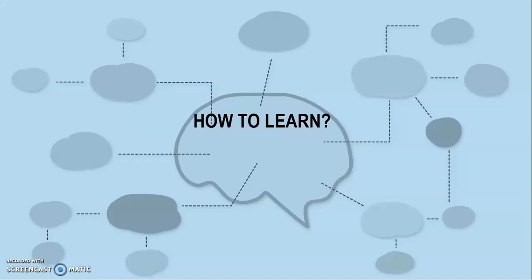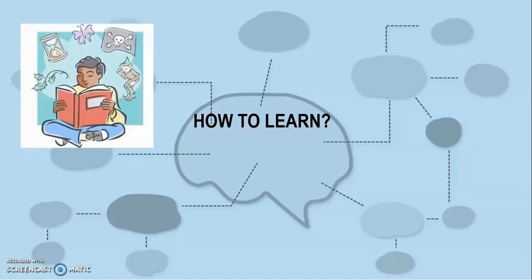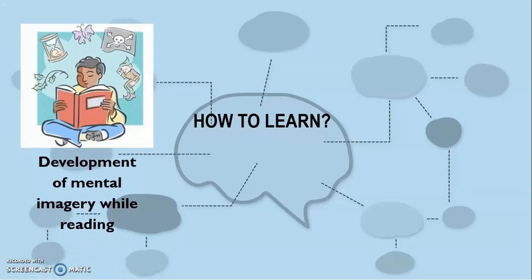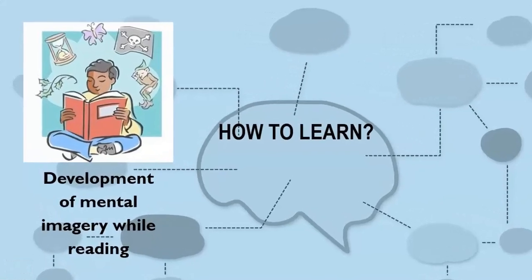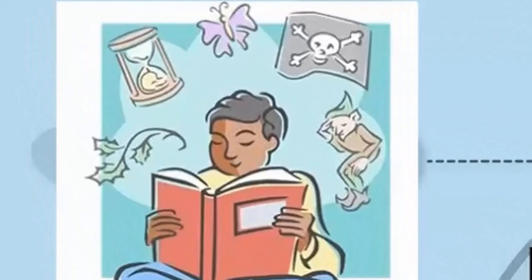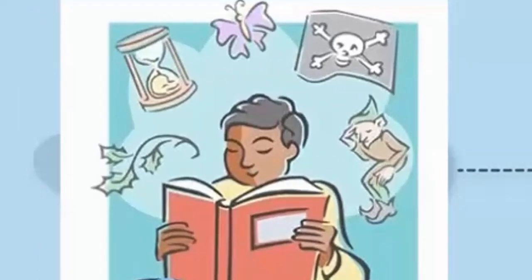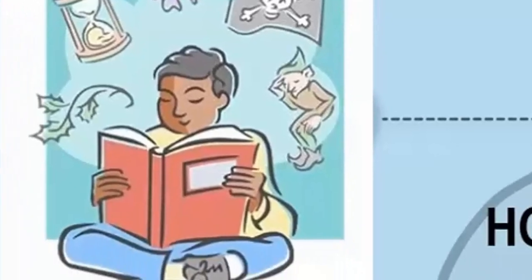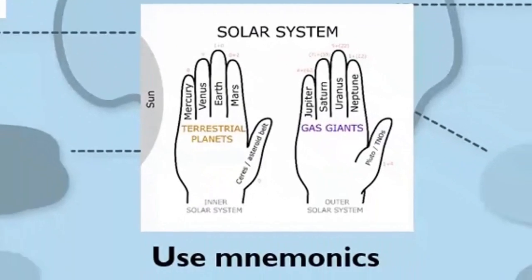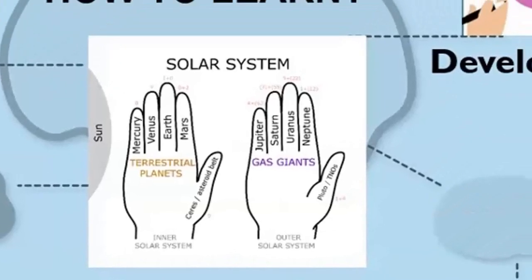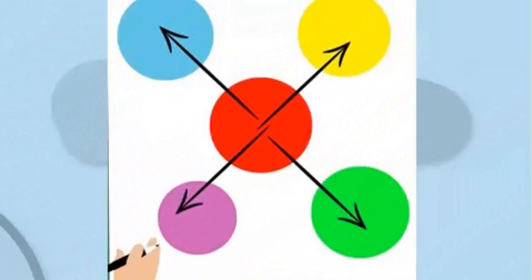There are many ways to learn, and there are some tricks. Some people develop a mental image while reading — associating their reading with their experiences and framing mental imagery. Some people develop mnemonics, which are short formulas, like 'My Very Educated Mother Just Shows Us Nine Planets.' Some people use mind maps, develop images, draw graphs.